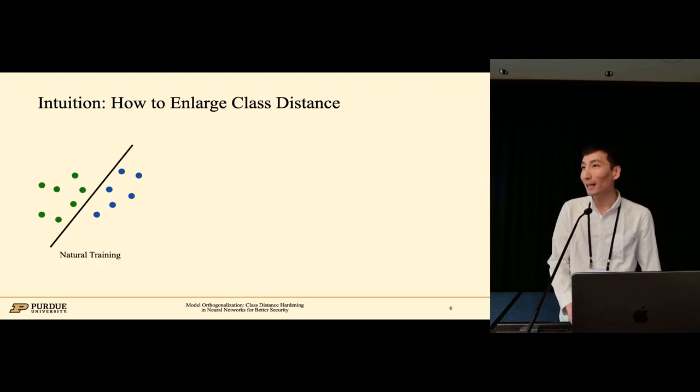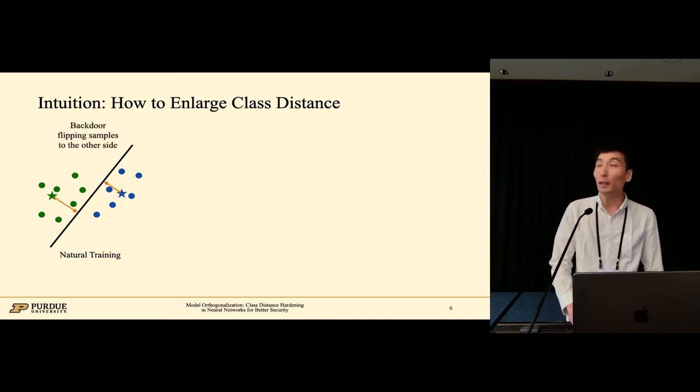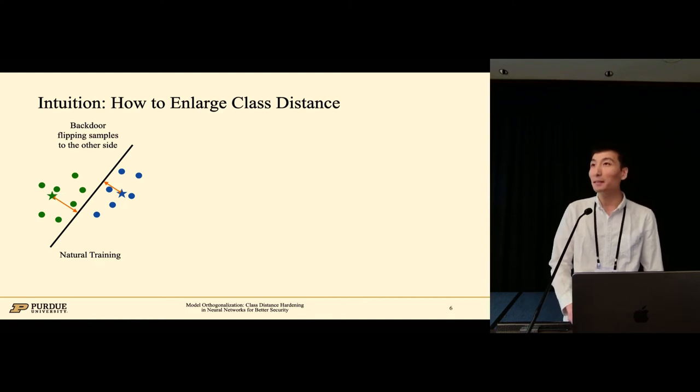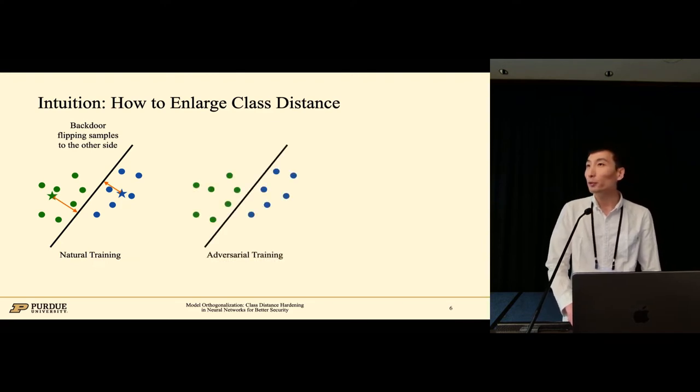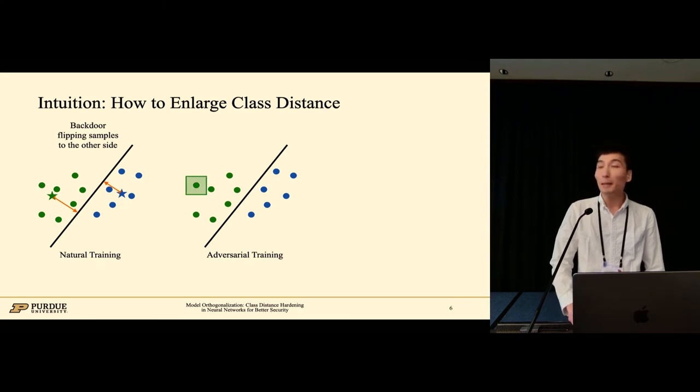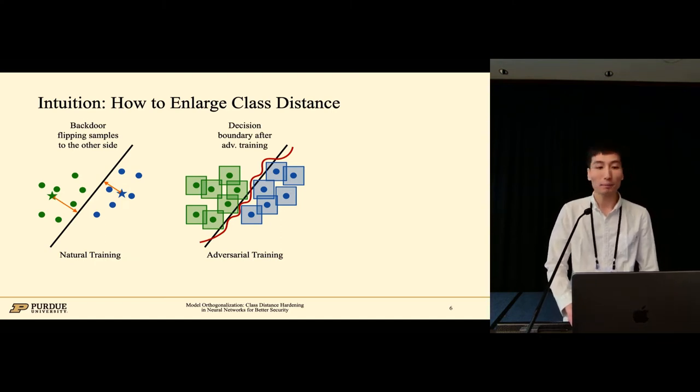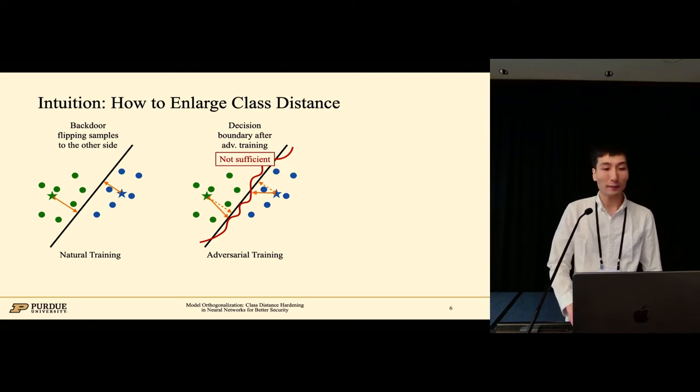Suppose we have two classes, green and blue. Natural training uses a straight line to separate them. This star denotes the center of a sample mass. The orange line denotes the backdoor flipping samples to the other side. The length of orange lines denotes the class distance. We can see that the distances are small, meaning the samples are close to the decision boundary. A straightforward proposal would be adversarial training. It aims to have consistent prediction for a sample within the LP norm ball. This shows the training procedure and the decision boundary after adversarial training. However, it is not sufficient for distance enlargement.